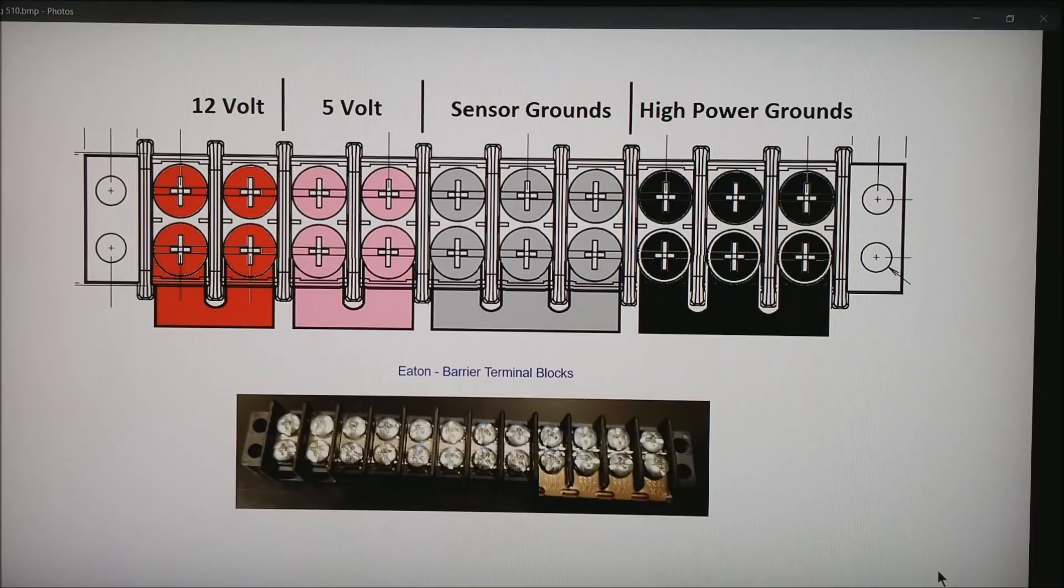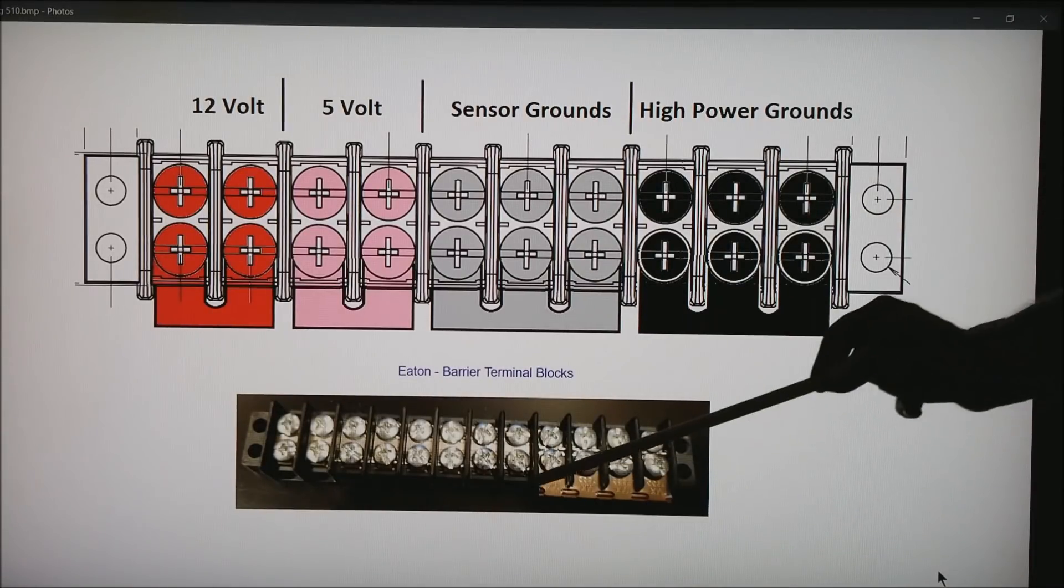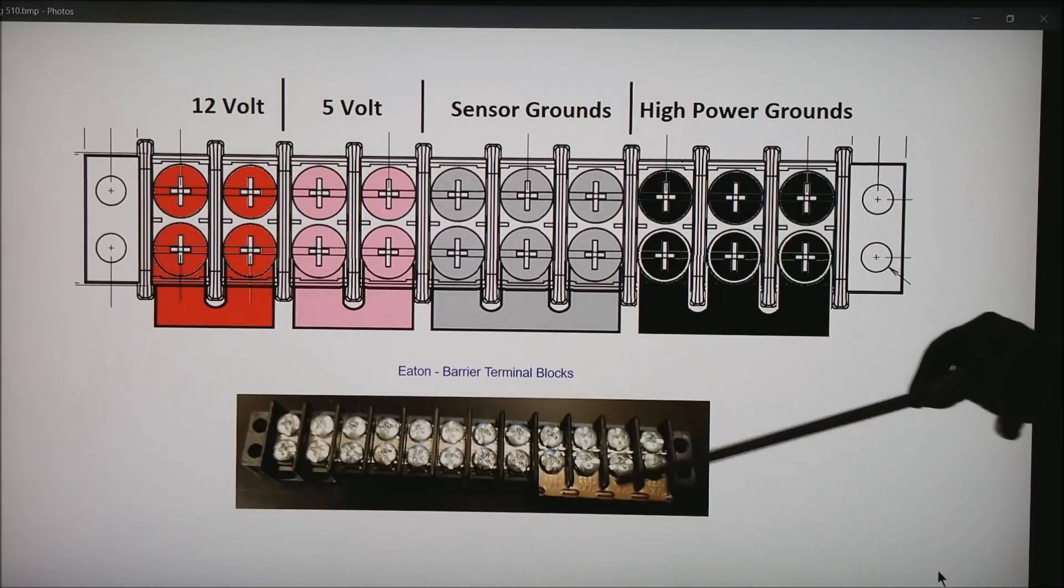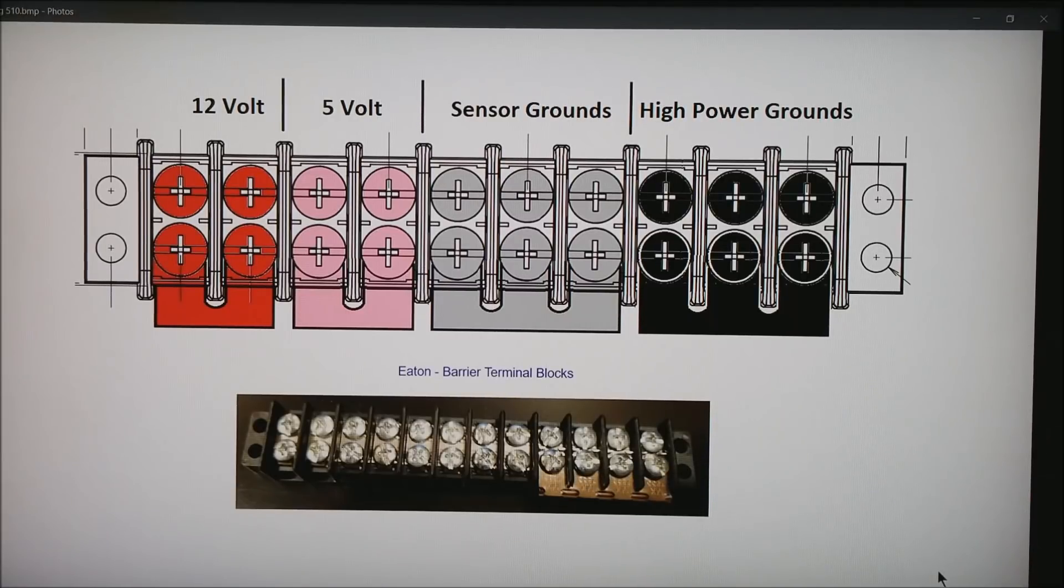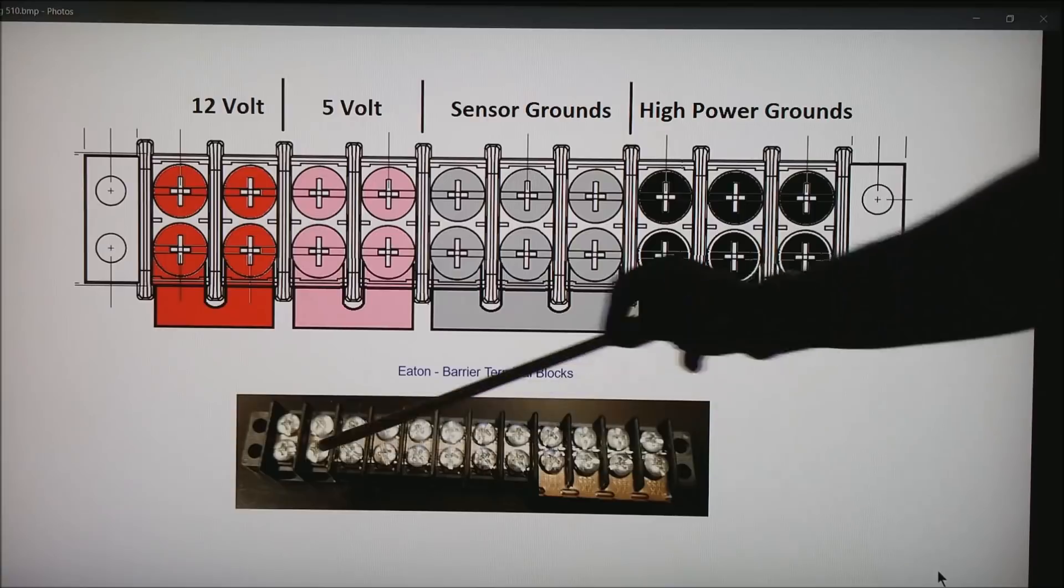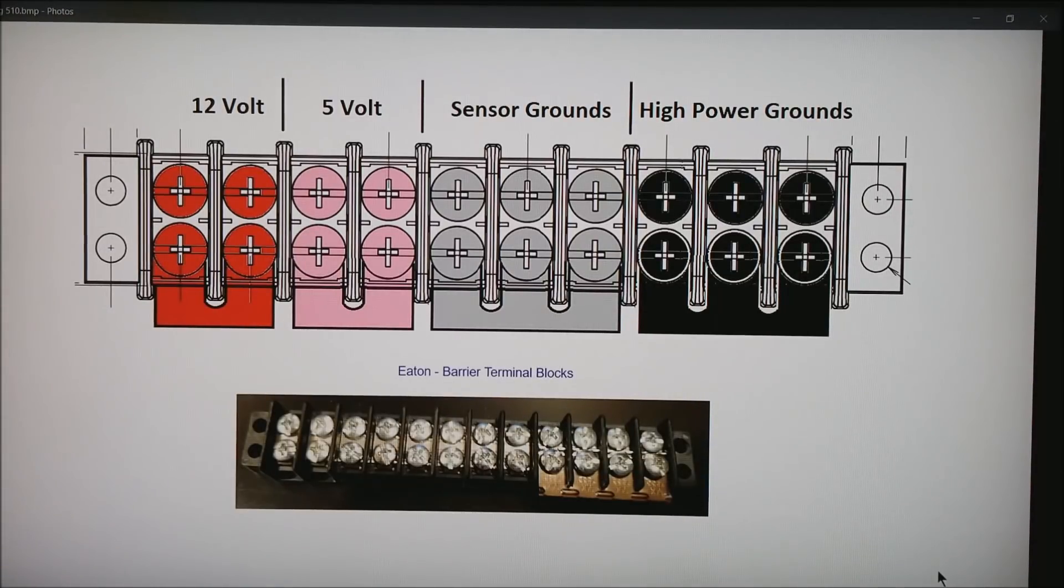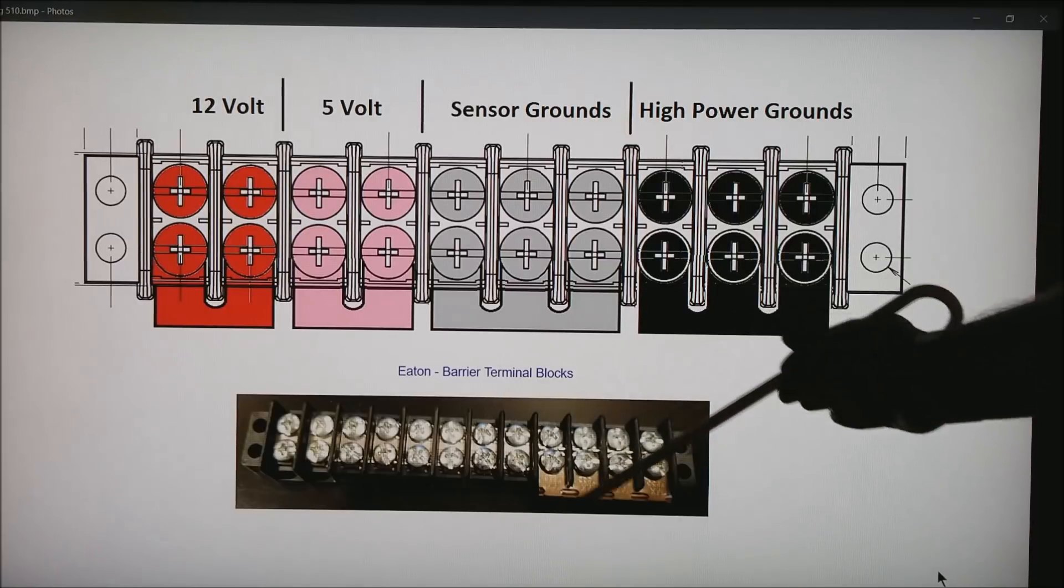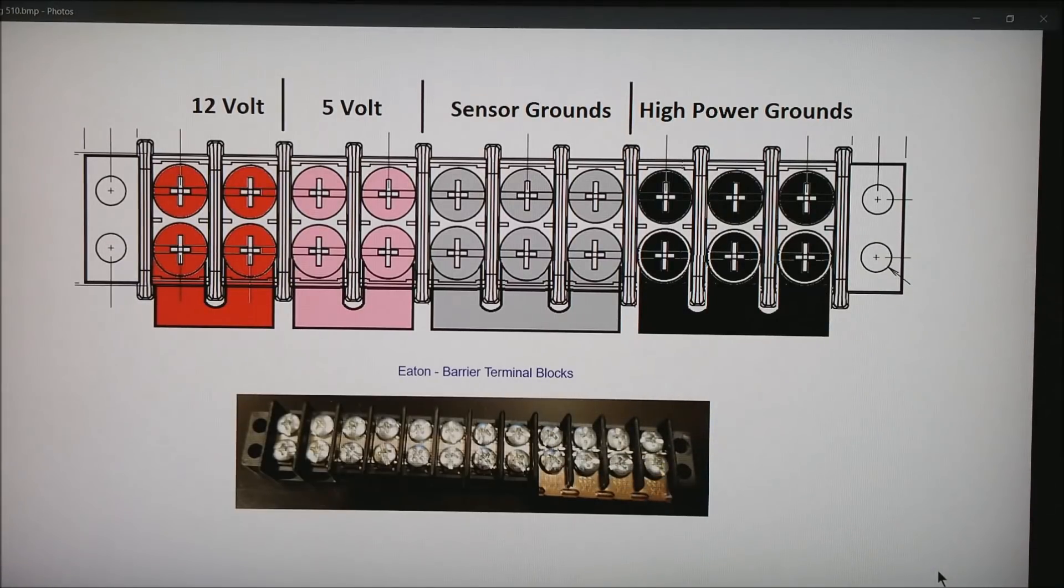Now let's talk about these barrier blocks. Basically what these things are is this is the one you can get from Eaton. Here's a picture of the jumper. This one happens to be cut down to just four screws. But when you get them they can come up to like 10 or 12 screw terminals.